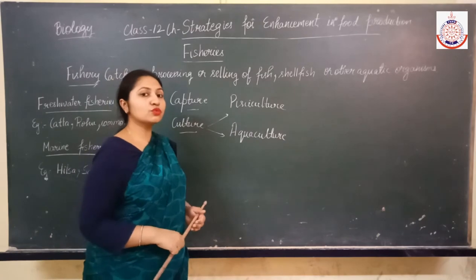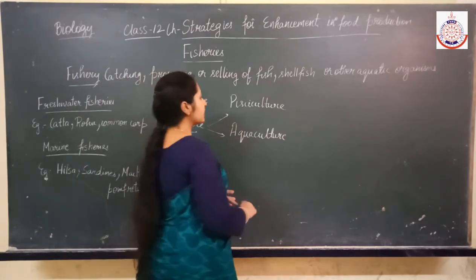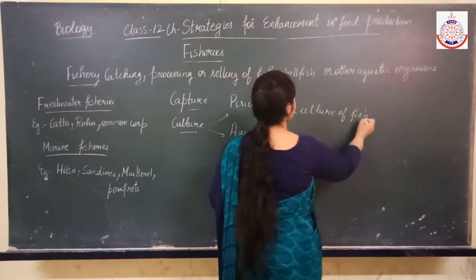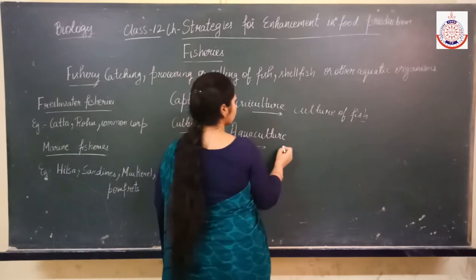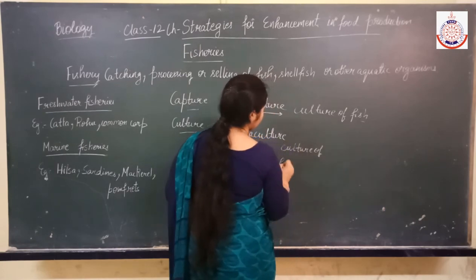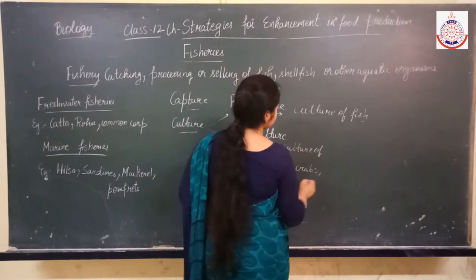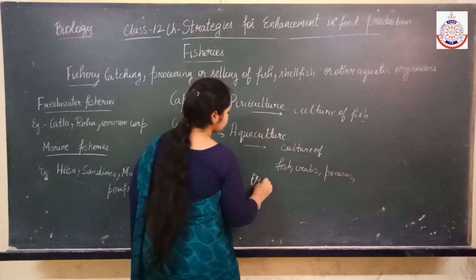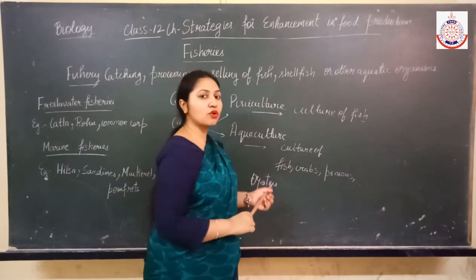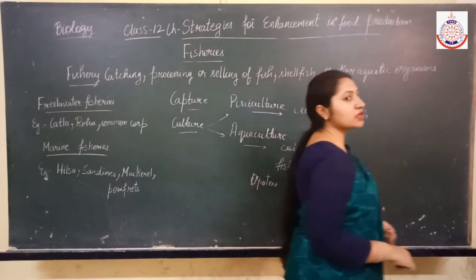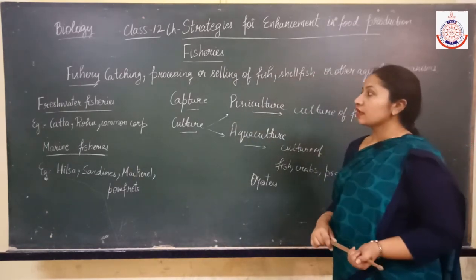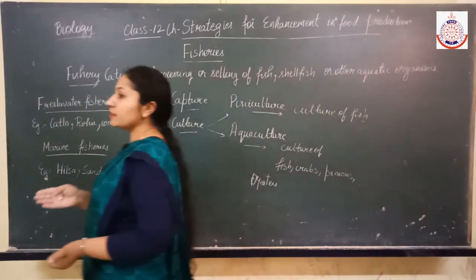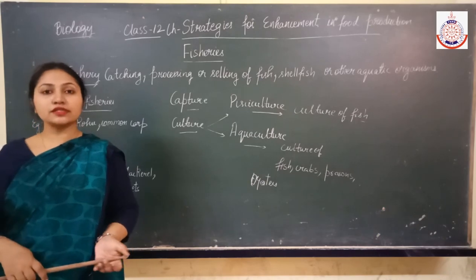Now the difference between pisciculture and aquaculture: both are types of culture fisheries, meaning fish is obtained through fish farming. Pisciculture is related to the culture of fish only. Aquaculture is related to the culture of fish as well as crabs, prawns, oysters, and other aquatic organisms. Aquaculture and pisciculture are related to the blue revolution, which refers to culture related to water.